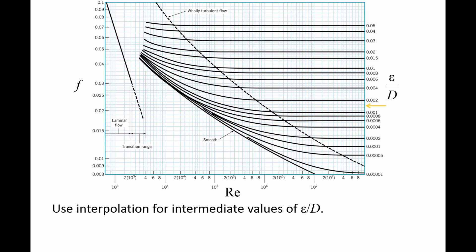For example, if the relative roughness of a pipe is 0.0015, you can estimate a curve between the 0.001 and 0.002 curves.